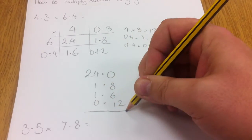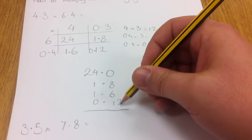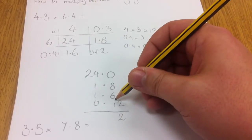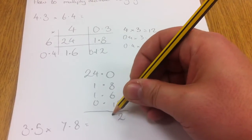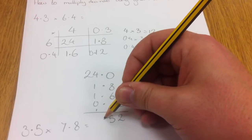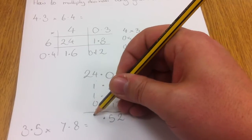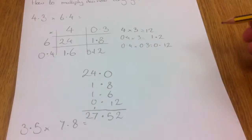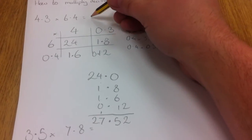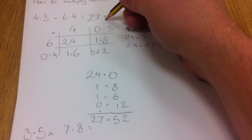If we add those up, making sure in the correct columns I have 2. 8 plus 6 is 14 plus 1 is 15. Carry the 1. Make sure my decimal point is in the right place. 4, 5, 6, 7 and 2. So my answer is 27.52.